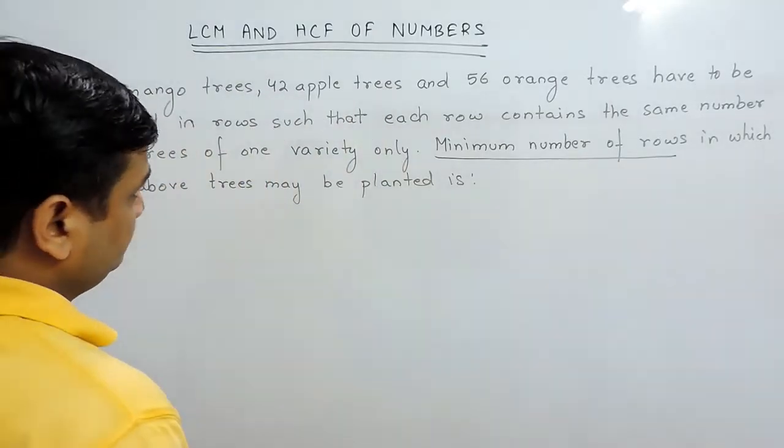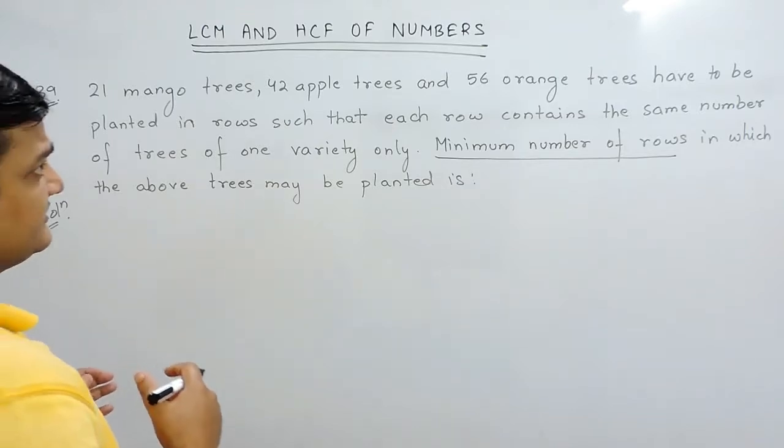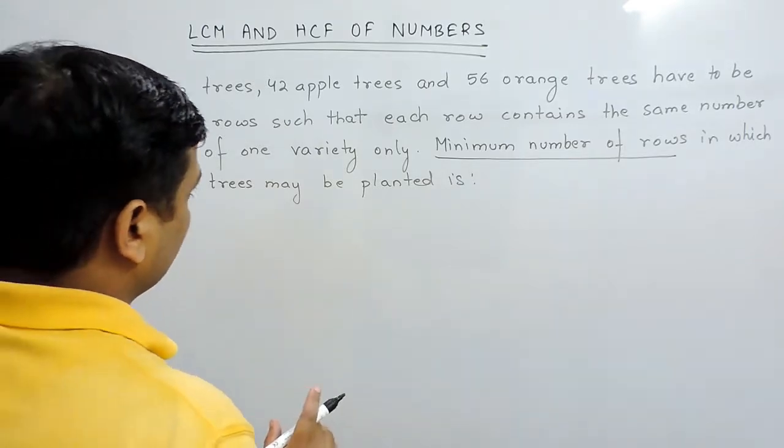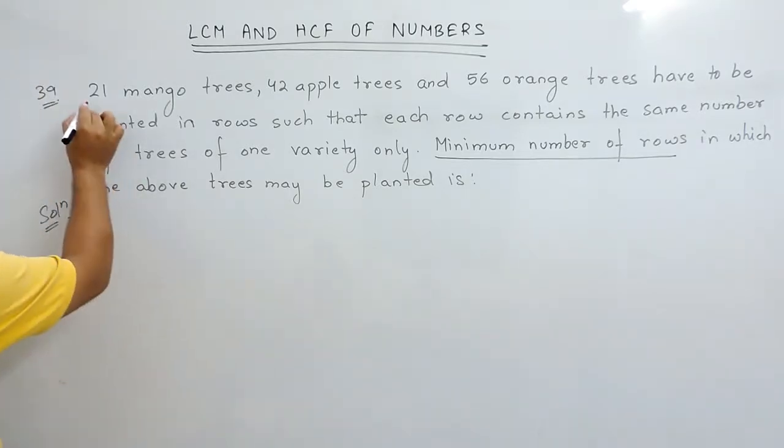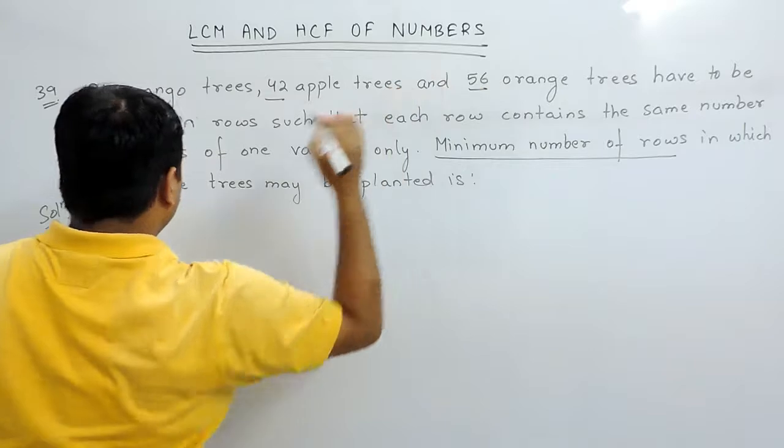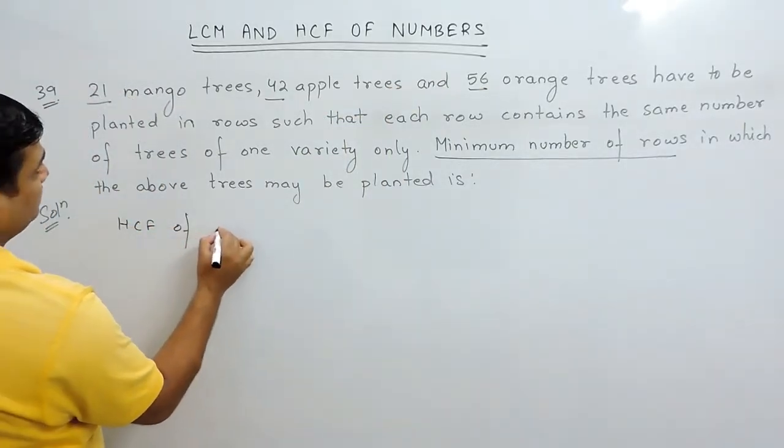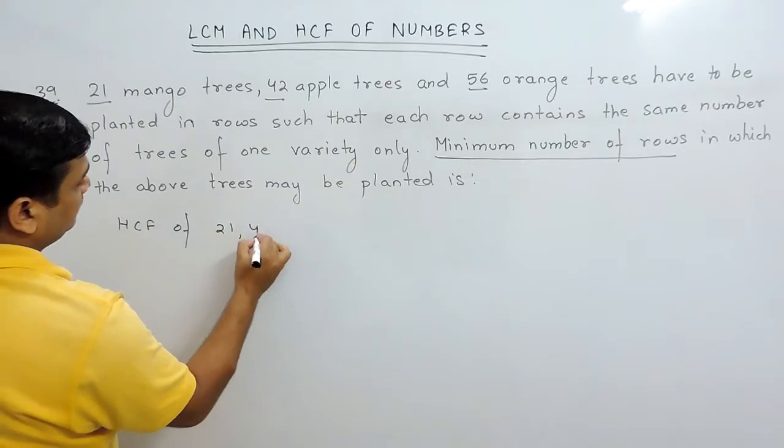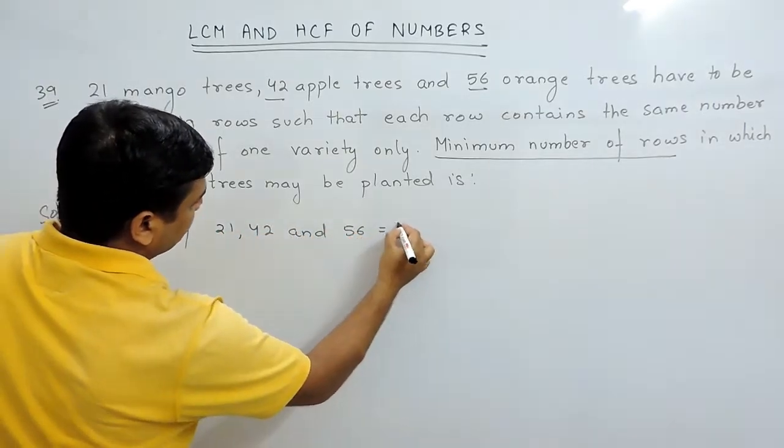The rows are minimum only when we will plant maximum trees in each row. Therefore, we have to find the HCF of 21, 42 and 56, which is 7.